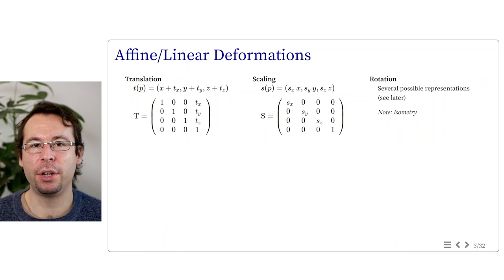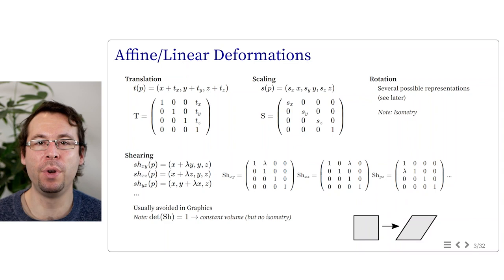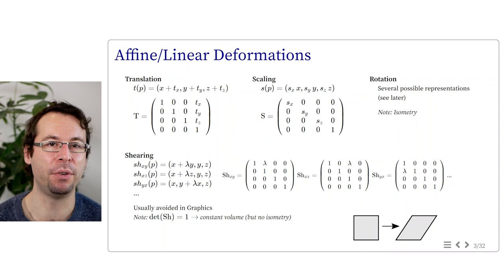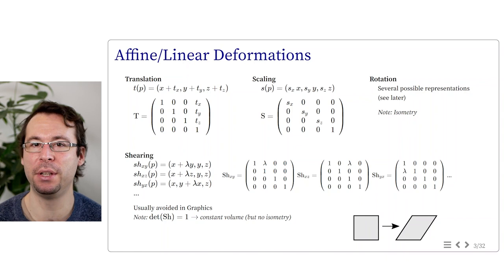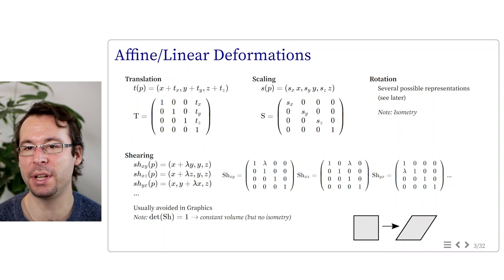Third, rotations. Three-dimensional rotations are complex to parametrize, and there are several possible representations we will describe later. Note that rotations are part of the isometry. Finally, although often forgotten, there is shearing transformation — it transforms a square into a diamond pattern, with many possible shearings between each pair of coordinates. Shearing is usually avoided. Note that the determinant of a shearing transform is 1, so it preserves volume, but it is not an isometry since distances are modified.